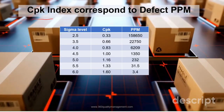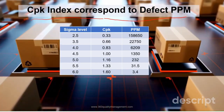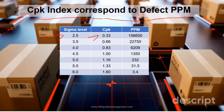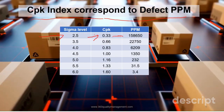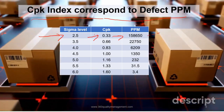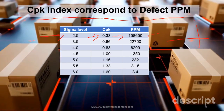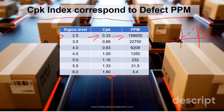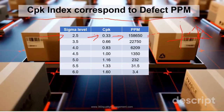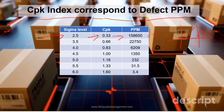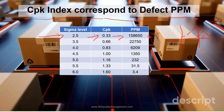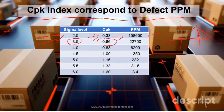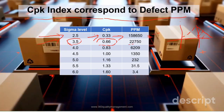The CPK index value actually corresponds to a defect PPM. At a sigma level of 2.5, which is a CPK of 0.33, we will have about 160,000 PPM reject — meaning a lot of parts will be out of the spec limit, either on the upper or lower spec side, depending on whether the CPK is CPU or CPL. At a sigma level of 3.5, corresponding to a CPK of 0.66, we will have about 22,750 PPM reject, which is still very high.